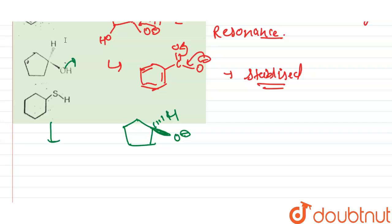Also, in fourth, if we remove H, we have negative charge on sulfur. Now, negative charge on sulfur is more stable,